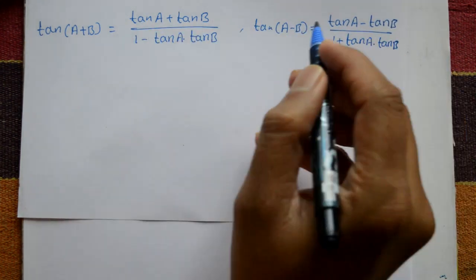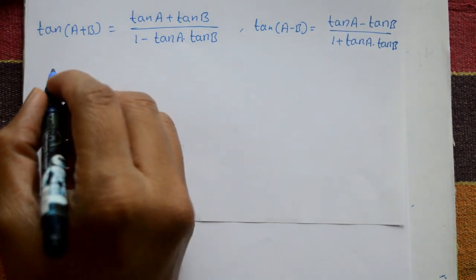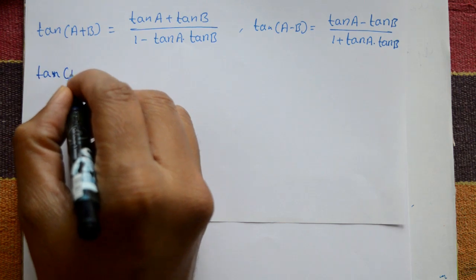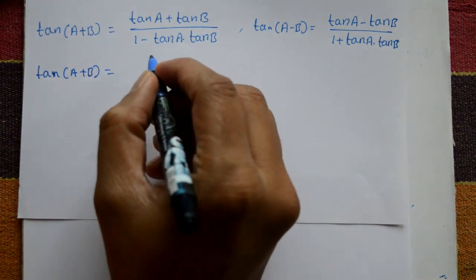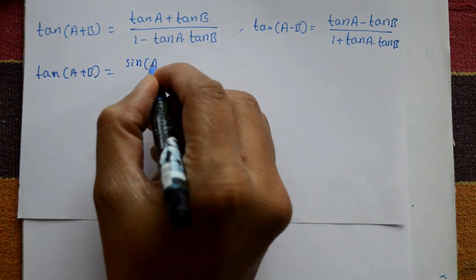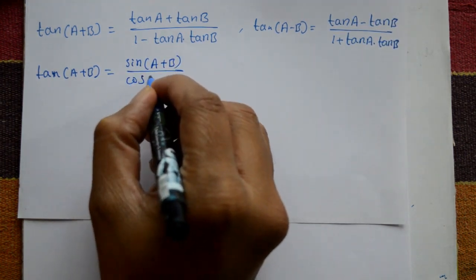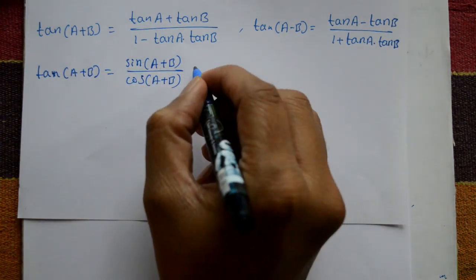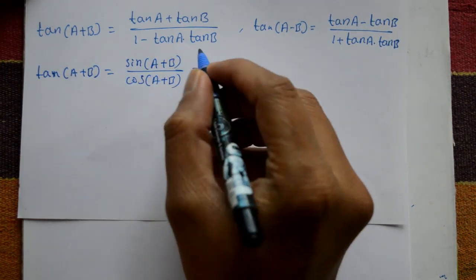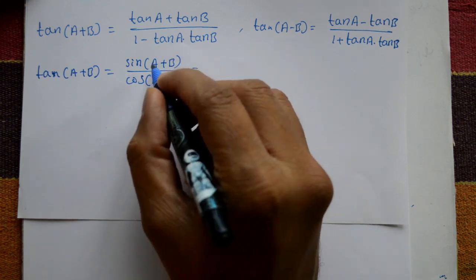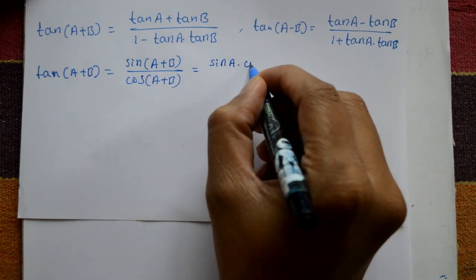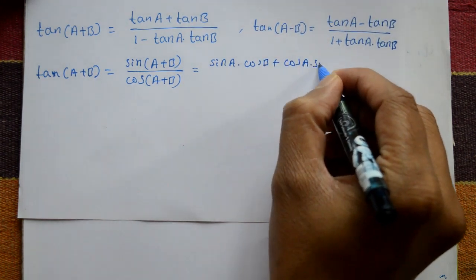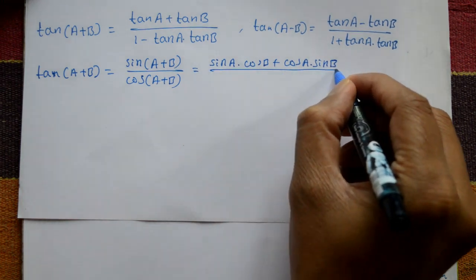So we have to prove these two formulas. Now tan(a+b) is equal to sin(a+b) divided by cos(a+b), because tan is sin by cos. Using the standard formula, sin(a+b) is equal to sin a into cos b plus cos a into sin b — this is the numerator.